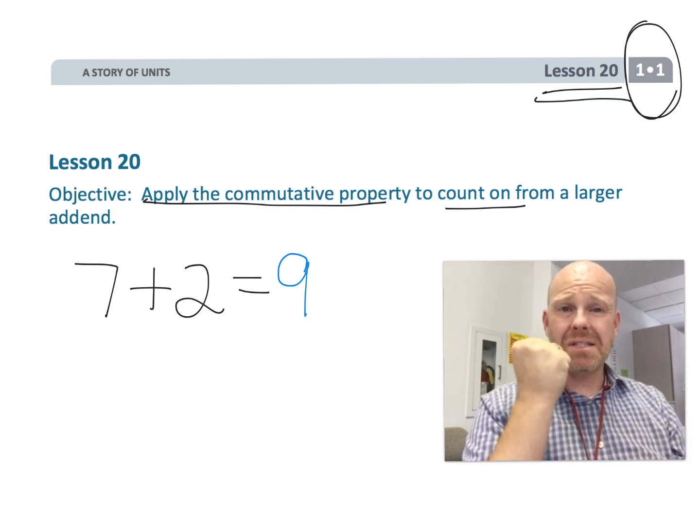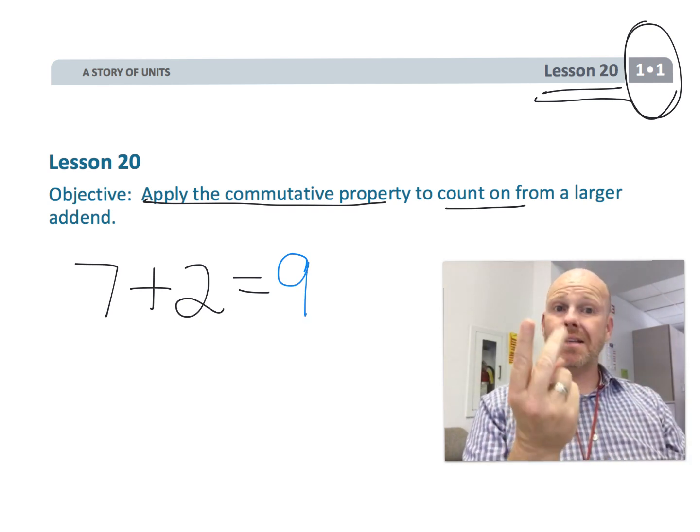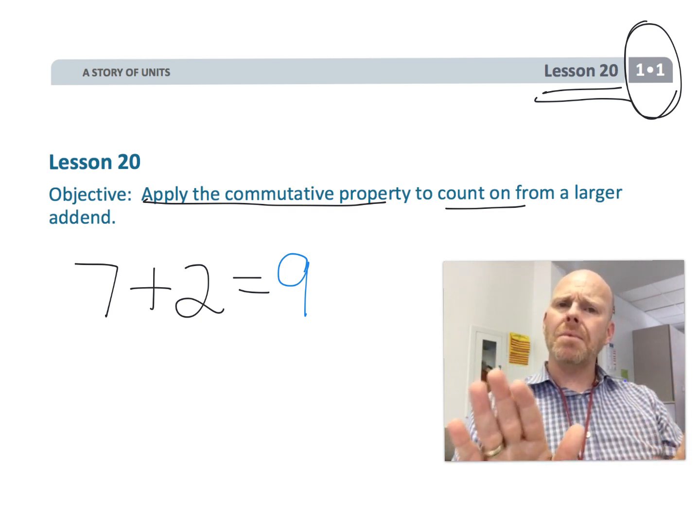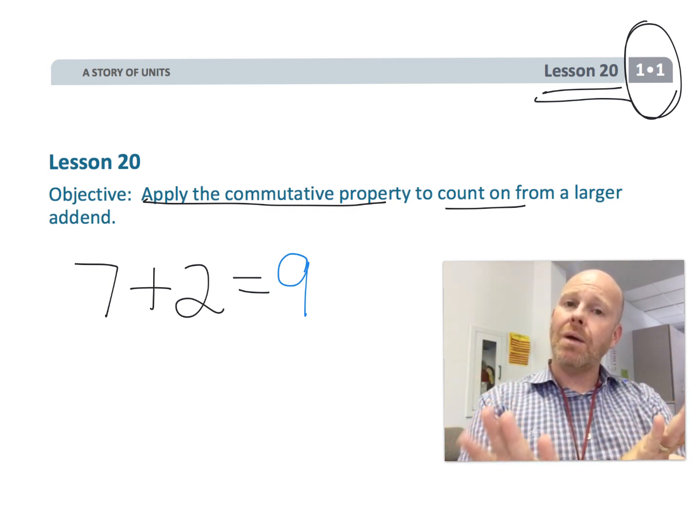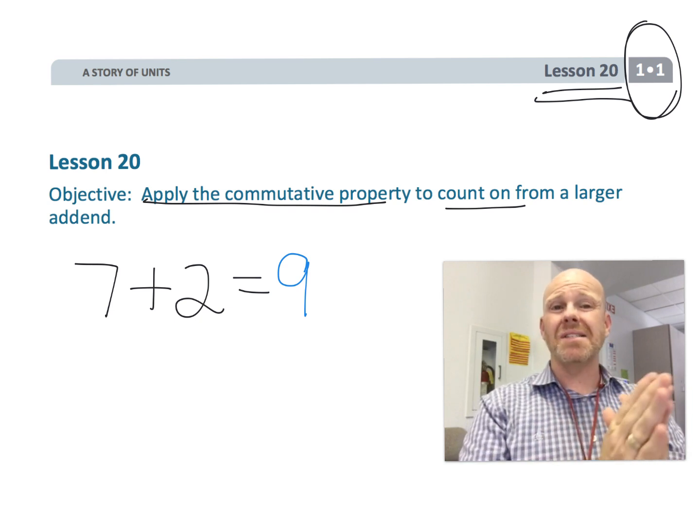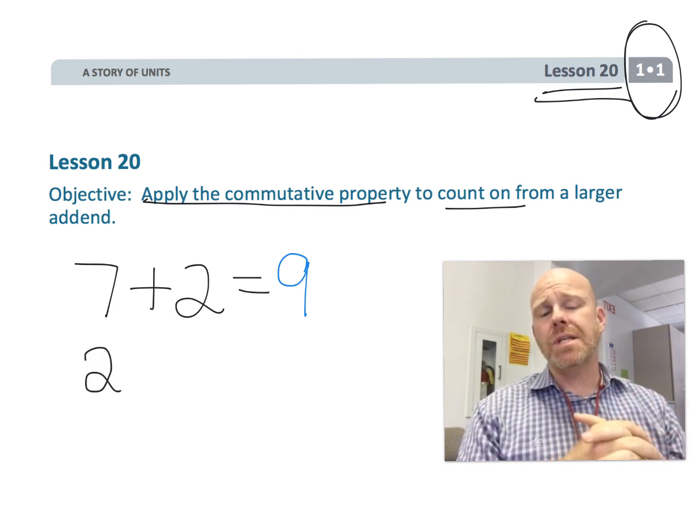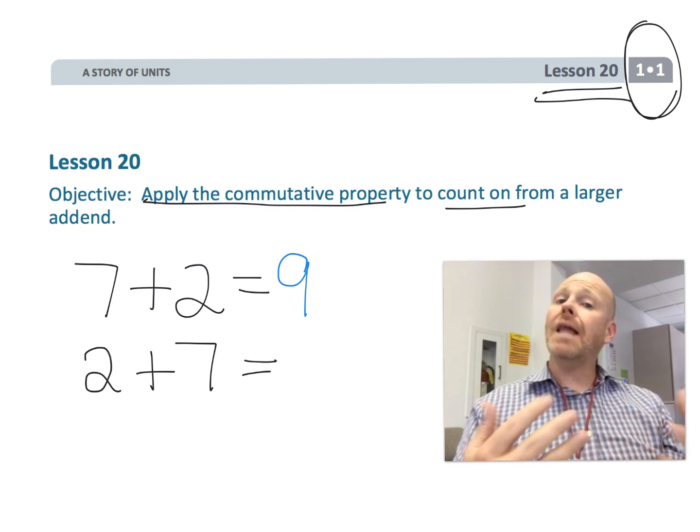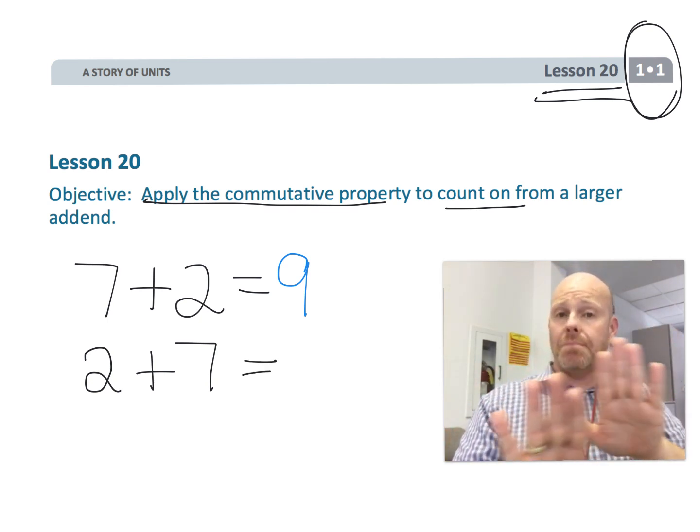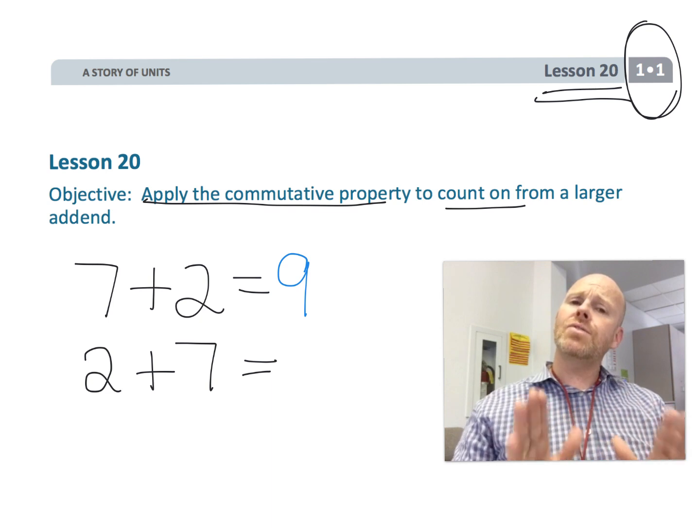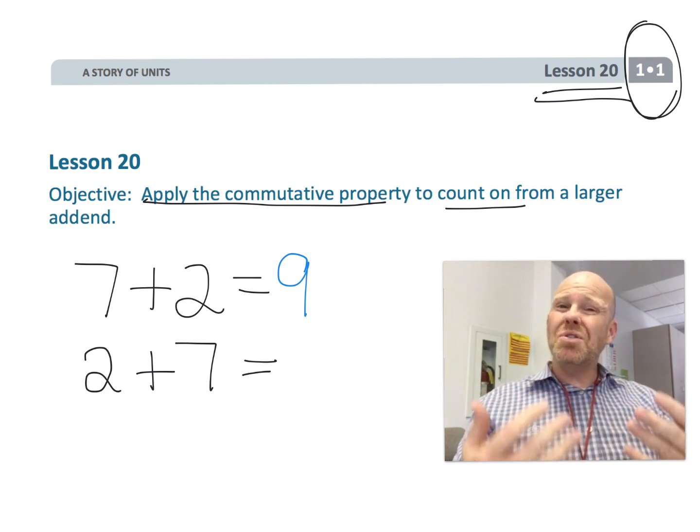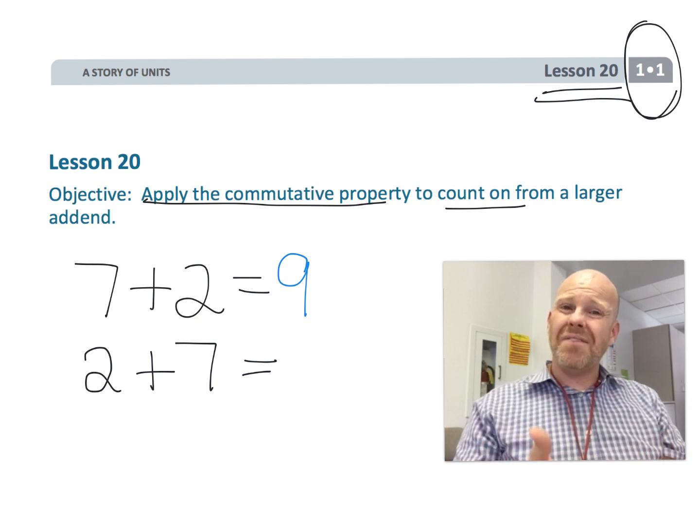But what if the problem was written the other way? What if it said two plus seven? We want students to understand that the commutative property of addition allows us to switch the numbers around so that we can start with the larger number.